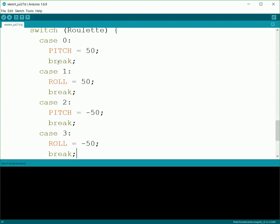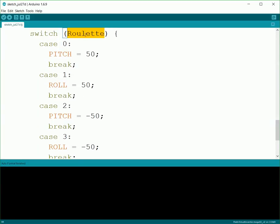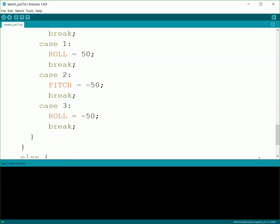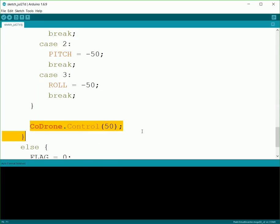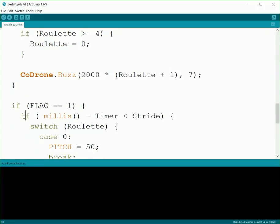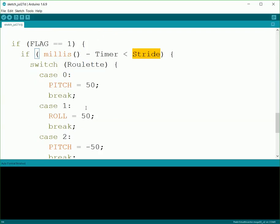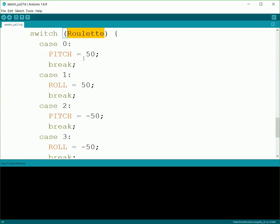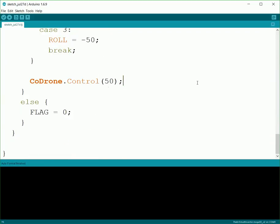And now, it'll go through, and depending on what value roulette is, because we said roulette's a number between 0 and 3, it'll go in a different direction. So now we've had the values get set, so now we just need to do the send. So we'll do a CoDrone.control at the end of our switch statement. So now we'll go through, we'll do CoDrone.control 50, so that way it sends the information to the drone. And now, for however long the stride is, it'll move in the roulette direction, and it'll just send it on to it.